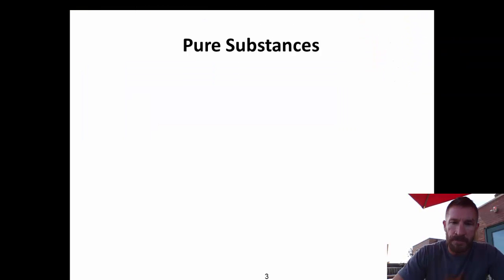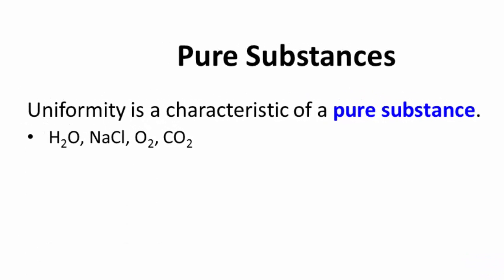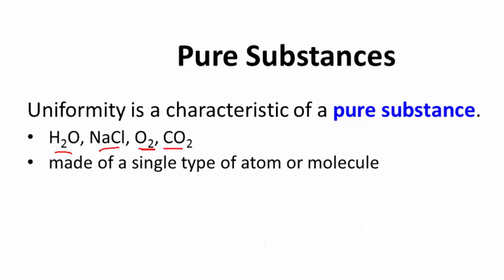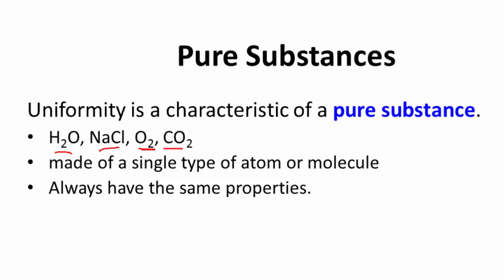Pure substances have uniformity — that is a characteristic of a pure substance. Examples include water, NaCl, O2, and CO2. Among these, three are compounds and only one is an element, because it is composed of only one type of element. Pure substances have a single type of atom or molecule. If we have water, we have all H2O — two hydrogens per one oxygen atom. Similarly, carbon dioxide always has one carbon for every two oxygens — always that same ratio. Lastly, pure substances always have the same properties, so any sample of water would always have the same properties as any other sample of water, given the same conditions.